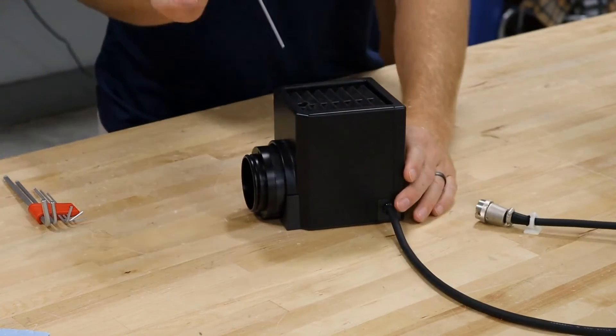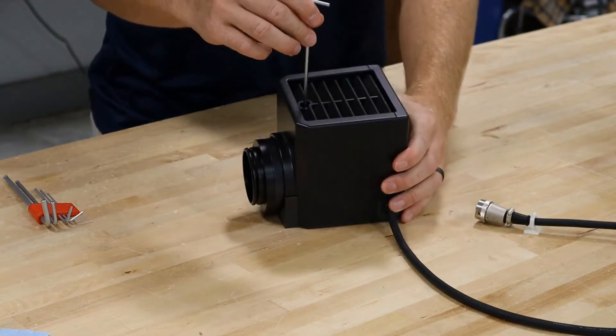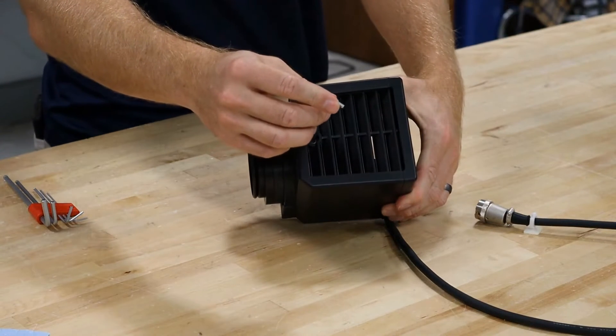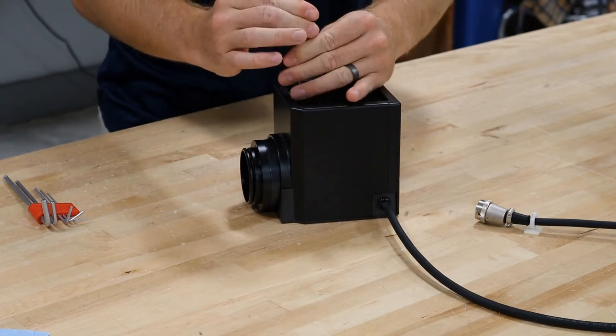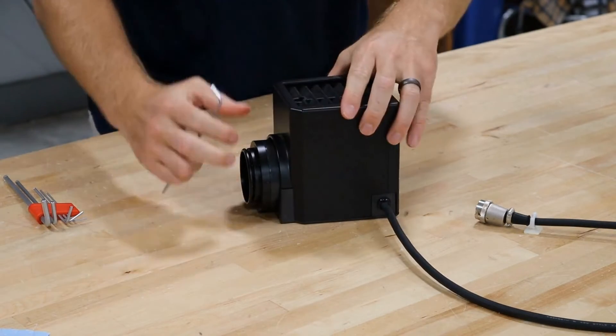Now that we've got our lamp house removed, we're going to switch over to Chad and he's going to show you how to change the bulb. Take your three millimeter wrench and loosen the small screw on the top of the lamp house. Give it a few turns and then you should be able to slide the top of the lamp house off.